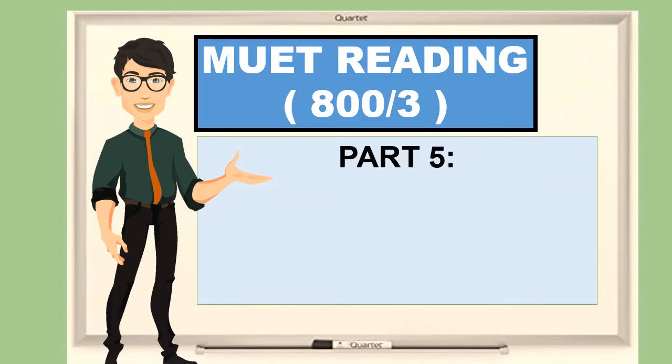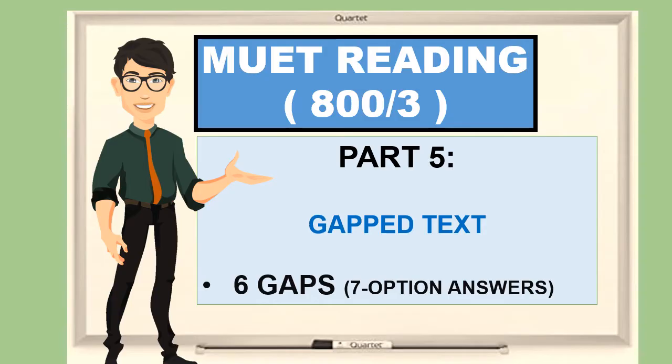What is part five? Part five is a gap text consisting of six gaps with seven option answers.